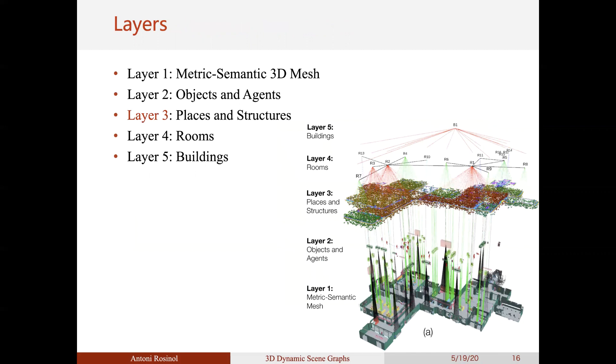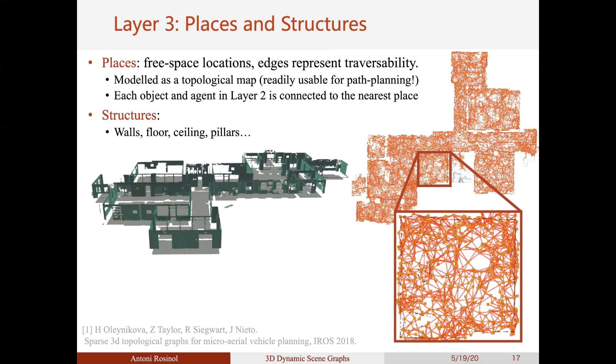After layer 2, we built layer 3, which contains places and the structure of the scene. First, we define a place as an unoccupied region of the scene where the robot can navigate. Two places are connected by an edge if we can go from one place to the other in a straight path. Therefore, the constructed graph is a topological map and allows for path planning queries. We use the work of Oleinikova to automatically build the topological graph.